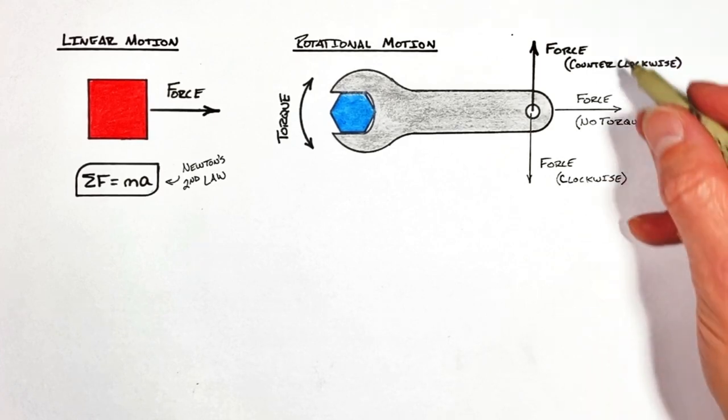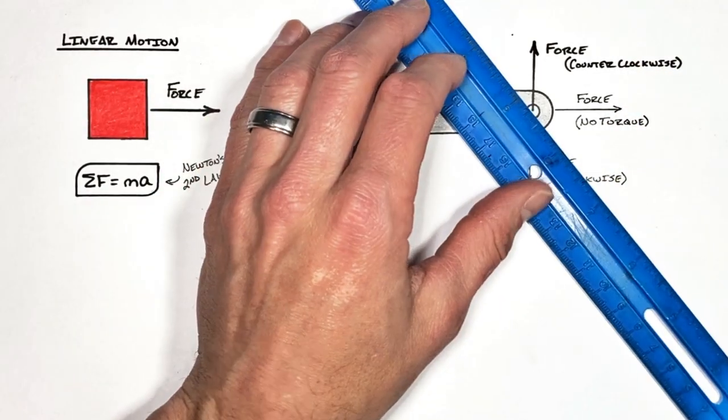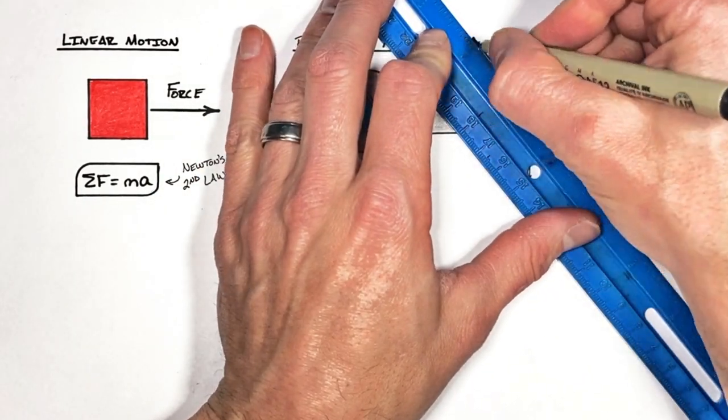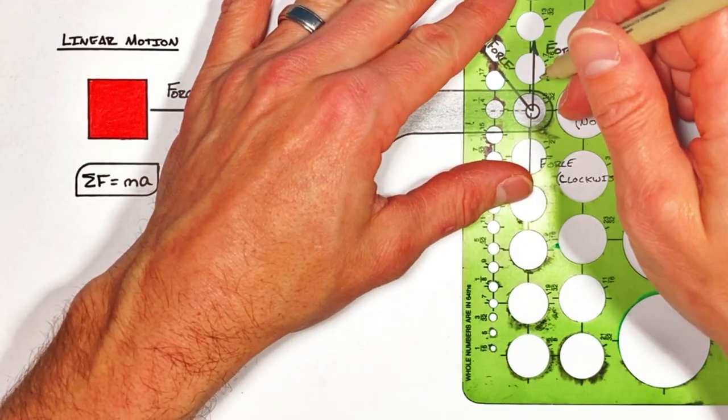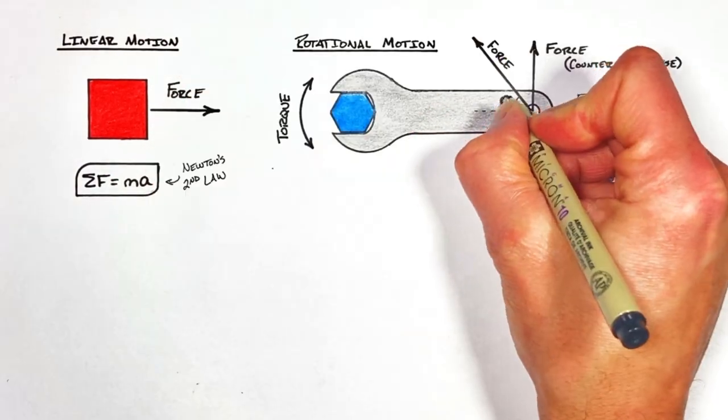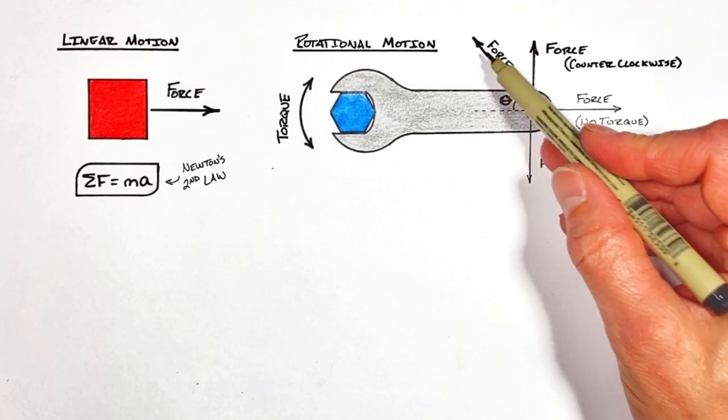And while this may be starting to feel kind of confusing, let's go one step further. And let's say we pushed on this wrench at some angle. Because this force is at an angle,